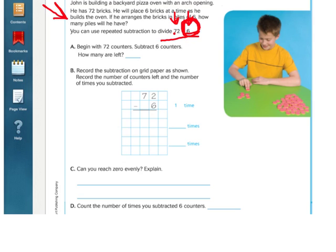It says right here, they've already started it for us, 72 minus six. 72 minus six is 66. So that was the first time I subtracted. Then I'm not at zero yet, so I'm going to subtract six again. 66 minus six is 60. That was the second time I subtracted. 60 minus six is 54. That was the third time I subtracted.